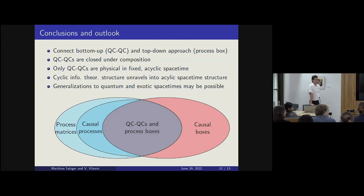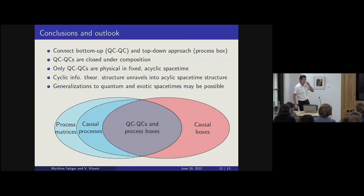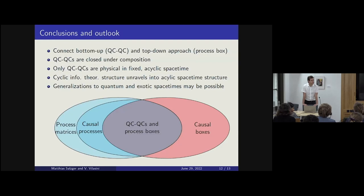Are there any questions? So I think I'm a bit confused by this slide. When you say that only the QCQCs are physical in fixed acyclic spacetime — because the quantum switch, as far as I understand, is inside the set of processes — you're saying it's physical in an acyclic spacetime, right? Yes, in an acyclic spacetime. The quantum switch is a QCQC. What our results tell us is that if you have a Minkowski spacetime, for example, you could implement the quantum switch, which is exactly what we find from experiments.